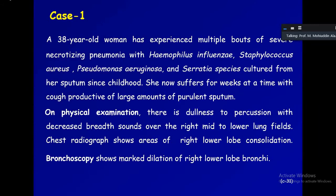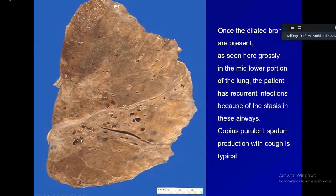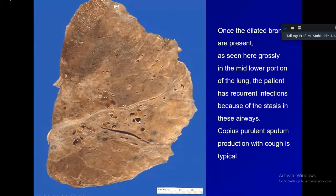The gross photograph shows dilated bronchi in the lower half of the lung — these dilated bronchi are not normally this wide or fixed in their dilation. This is abnormal. The dilation is caused by recurrent infections that fill the bronchi with pus; after the pus is expectorated, what remains is a fixed, permanently dilated bronchus.